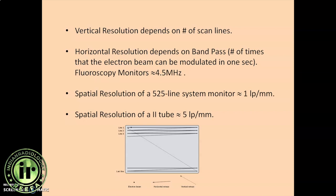In one second how many times I can change the intensity of the electron beam. If I can change modulation more, I can show you a better clearer picture and a true representation of the brightness of the object. Our fluoroscopy monitor standard typical monitors have 4.5 megahertz band pass. What I mean by 4.5 megahertz is in one second I can modulate 4.5 million times.